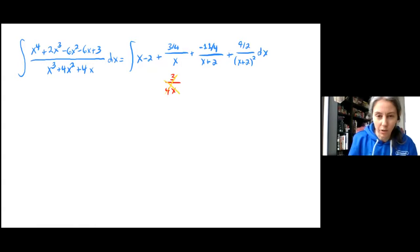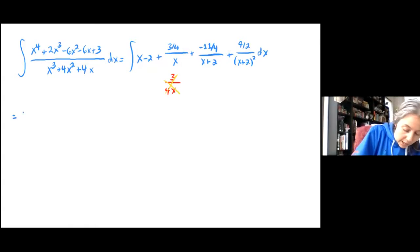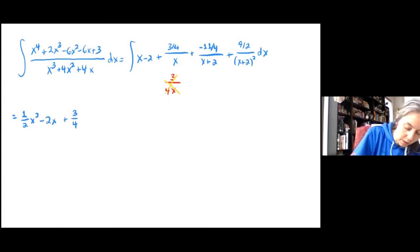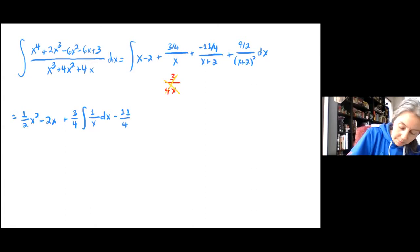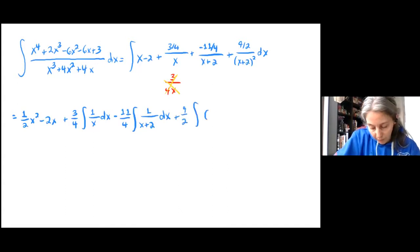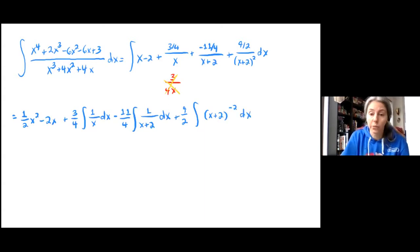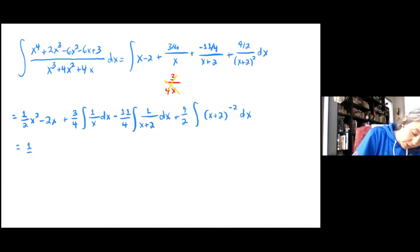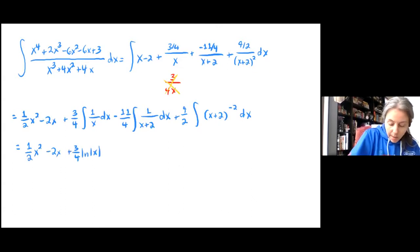I'm going to rewrite this just a little bit before we evaluate the integrals. The integral of x gives 1/2 x squared; minus 2x; plus 3/4 — a constant — times the integral of 1/x dx; minus 11/4 — a constant — times the integral of 1 over (x plus 2) dx; plus 9/2 — a constant — times (x plus 2) to the negative 2 dx. This gives us: 1/2 x squared minus 2x plus (3/4) ln|x| minus (11/4) ln|x plus 2|.